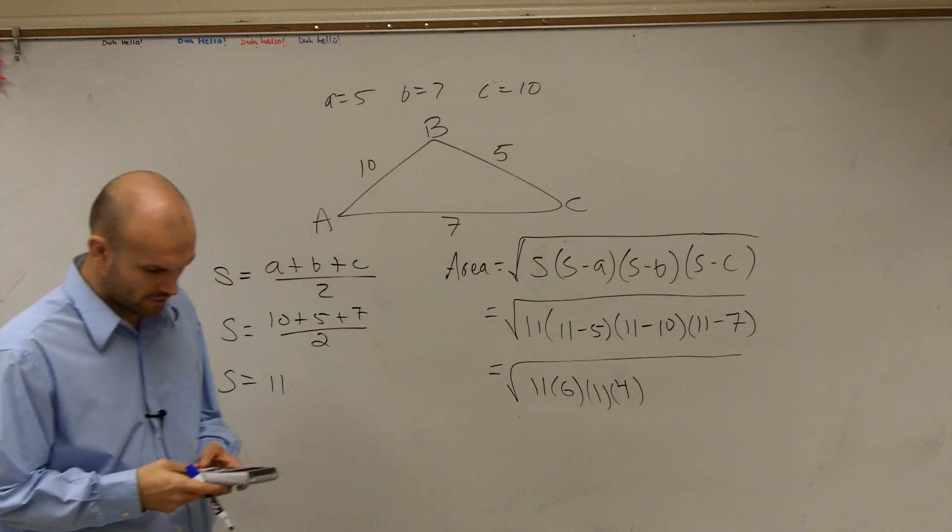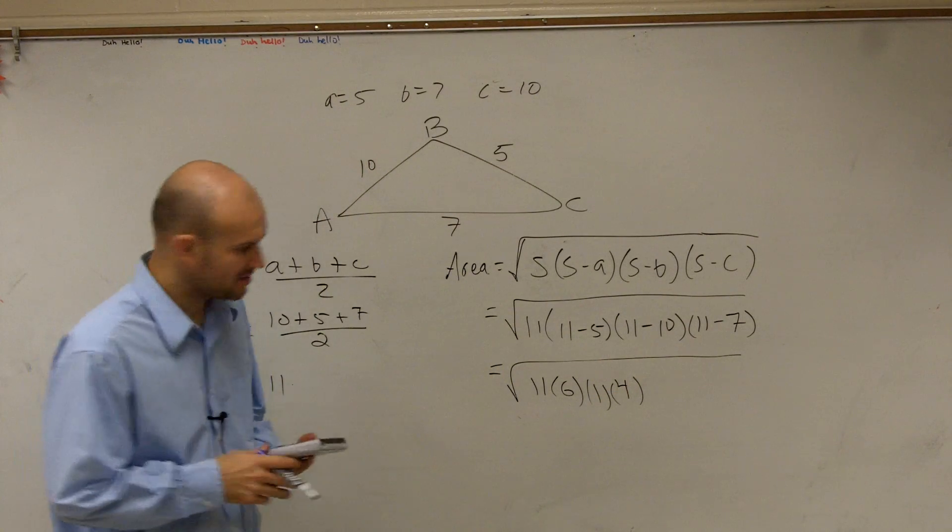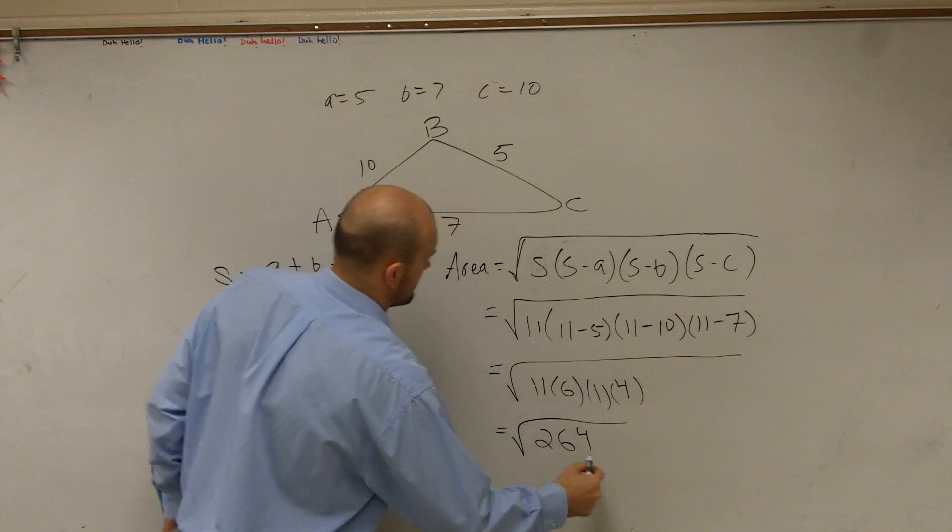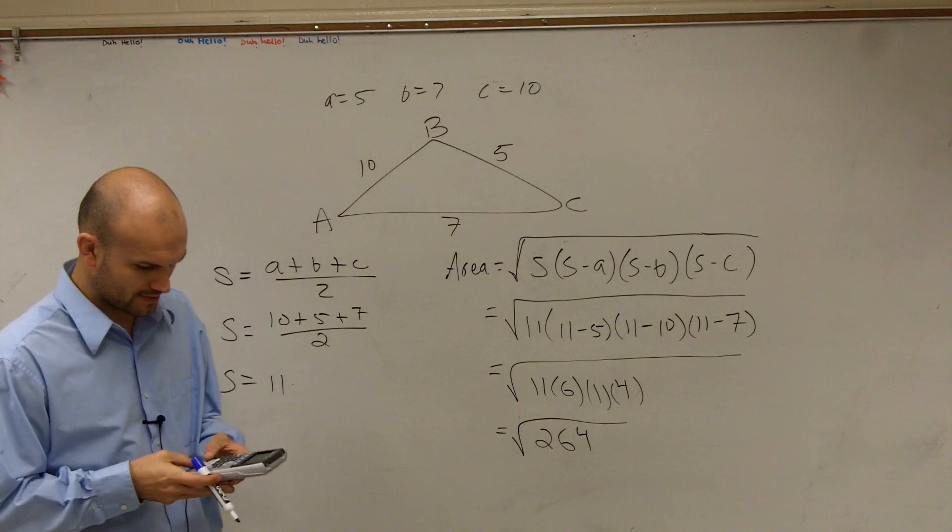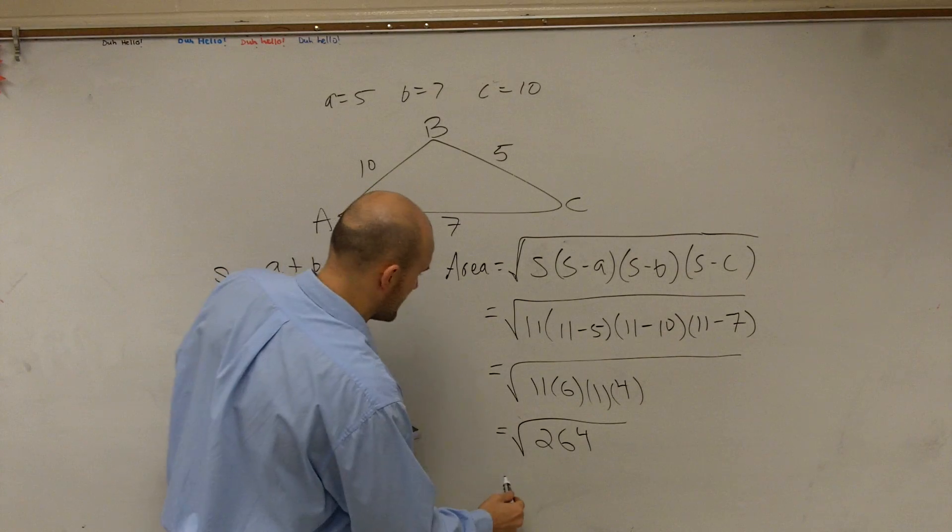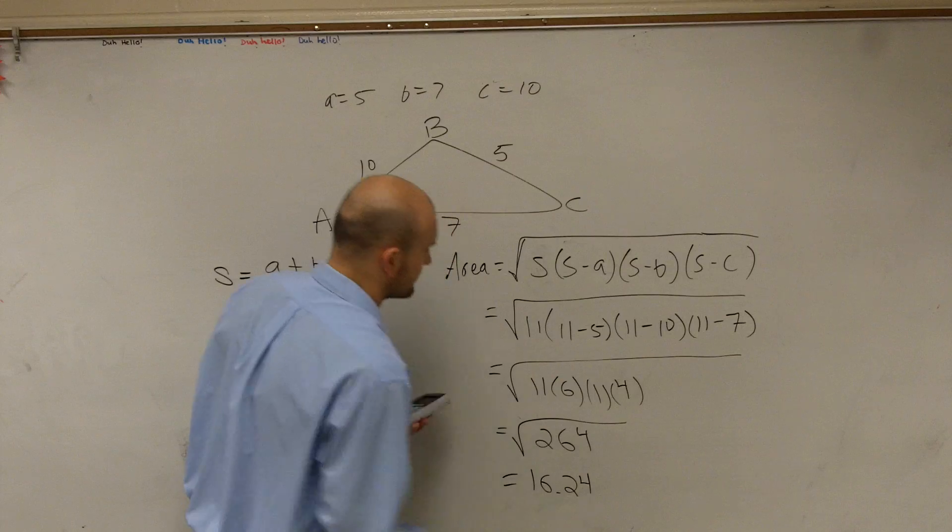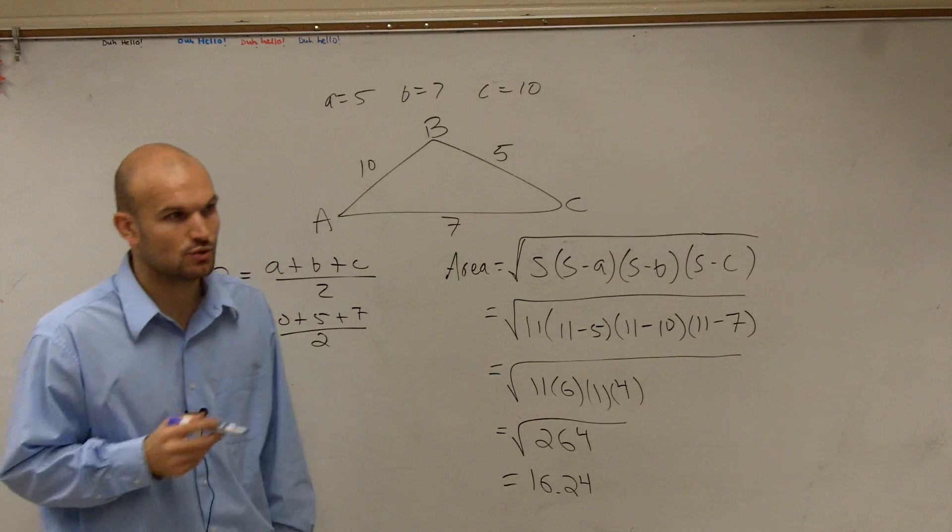So therefore, I have 24 times 11 is going to be 264. Then we take the square root of 264, and I get the area is going to be 16.24 units squared.